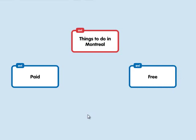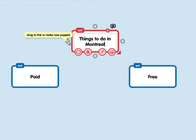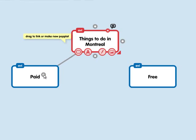Now the next thing I want to do is link these Poplets together to show the relationship between them. So I'm going to click on my main Poplet, click on this little circle over here, and drag it over to the other Poplet.